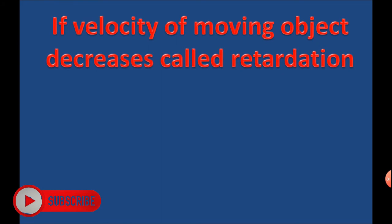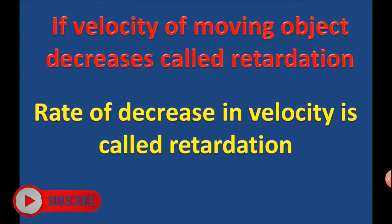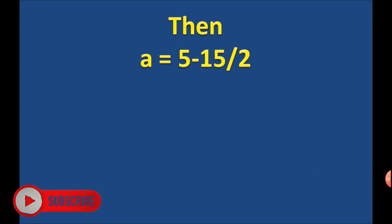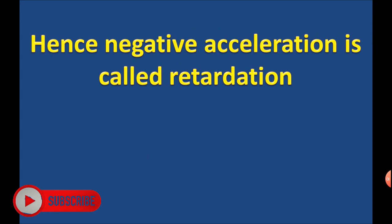If the velocity of a moving object decreases, it is called retardation. The rate of decrease in velocity is called retardation. For example, if initial velocity is 15 m/s and final velocity is 5 m/s, then a = (5 - 15) / 2 = -10 / 2 = -5 meter per second square. Here the value of acceleration is negative, hence negative acceleration is called retardation.